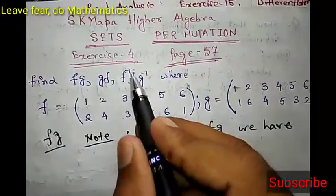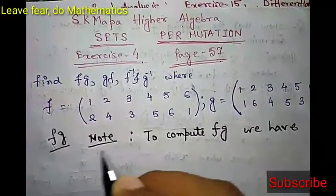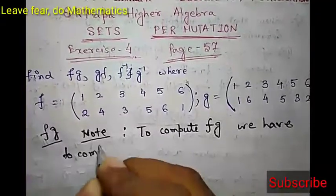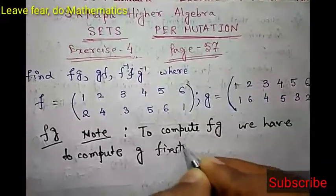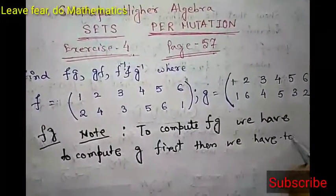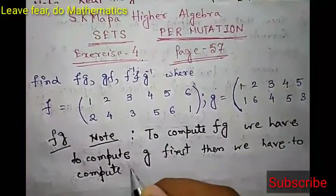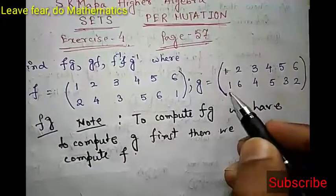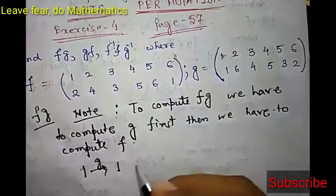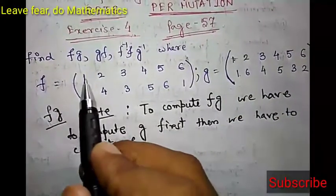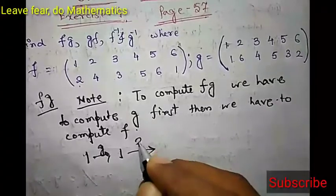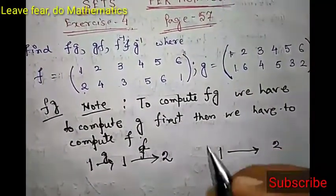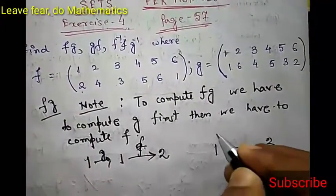To find fg, note that we have to compute g first and then f. This is our rule: we first compute g then f. So look at 1 - under g, 1 goes to 1. Then where does 1 go under f? 1 goes to 2 under f. So 1 goes to 2 under f composed with g, which is fg.